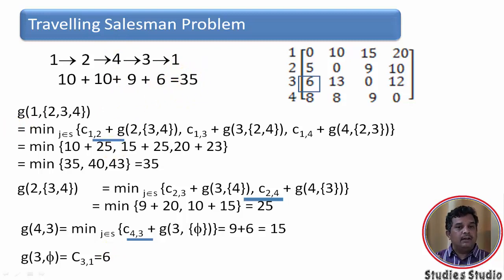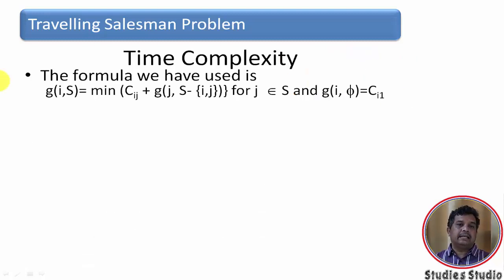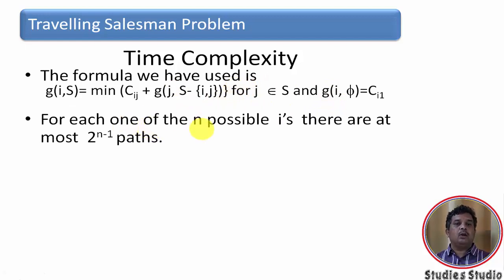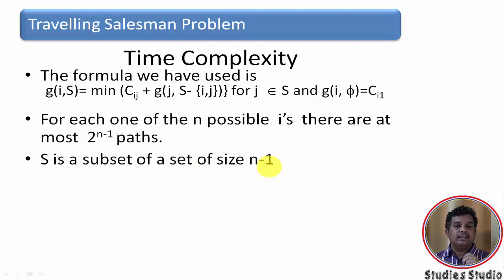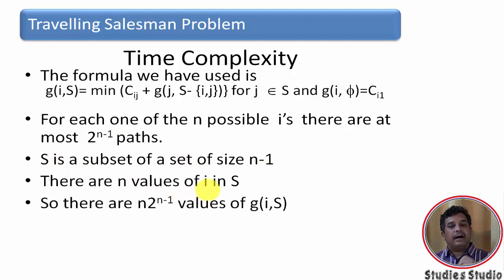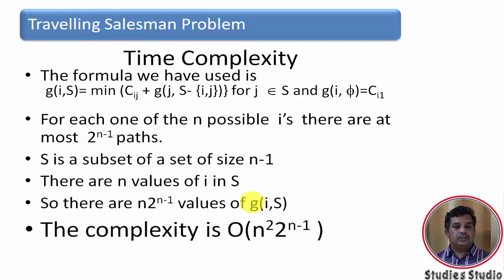Now let's look at the time complexity. For each of the n possible values of i there are at most 2^n paths. The salesman starts at vertex 1 and has n−1 remaining vertices, giving 2^(n−1) different paths. Since S is a subset of size n−1 and there are n values of i, the number of g(i,S) values is n × 2^(n−1). Therefore the time complexity is O(n² × 2^(n−1)).